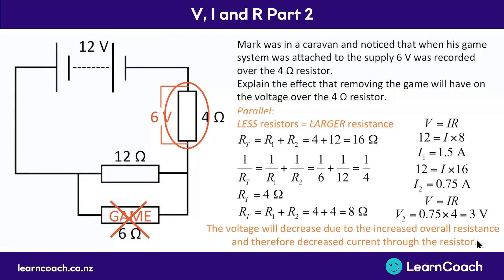That would be your final answer — an excellence level explanation. Just remember: if you take out something in parallel, it increases the overall resistance, and you can prove that using the resistance equations. Then use V = IR for the whole circuit and for individual components, and you'll be able to get your answer.